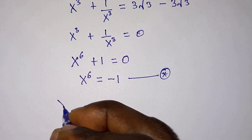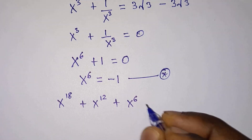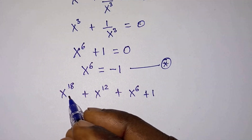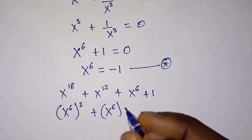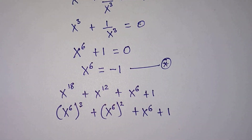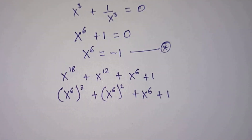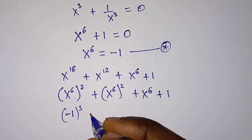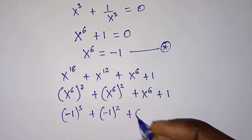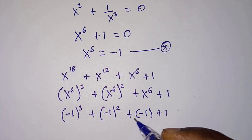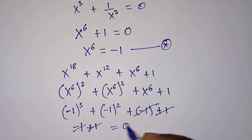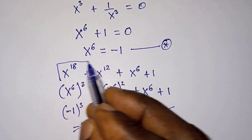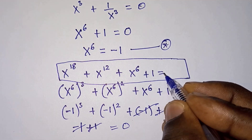From the problem, we need to find x to the power 18 plus x to the power 12 plus x to the power 6 plus 1. Note that x to the power 18 is the same as x to the power 6, all to the third power; x to the power 12 is x to the power 6 squared; then plus x to the power 6, plus 1. From equation star, x to the power 6 equals negative 1. So we get negative 1 to the third power, plus negative 1 squared, plus negative 1, plus 1. Negative 1 cubed is negative 1, negative 1 squared is positive 1, and negative 1 plus 1 equals 0. So the value is 0.